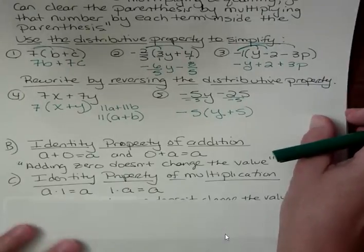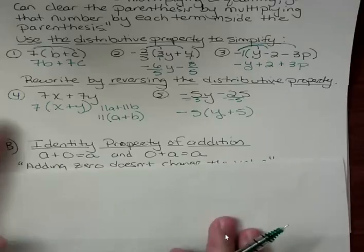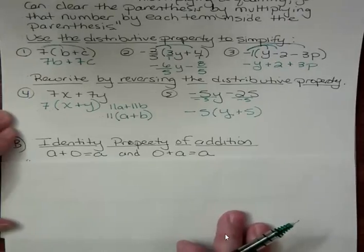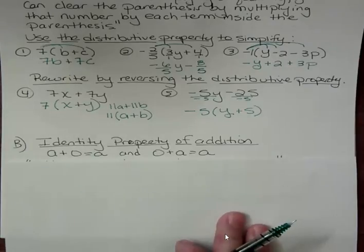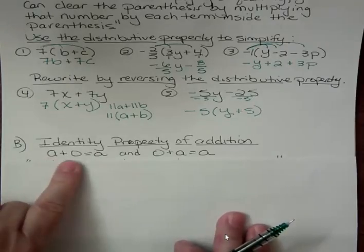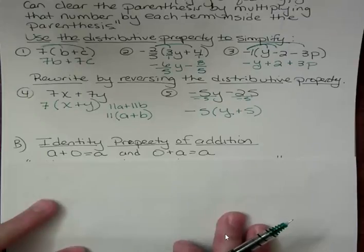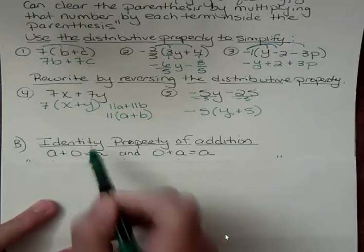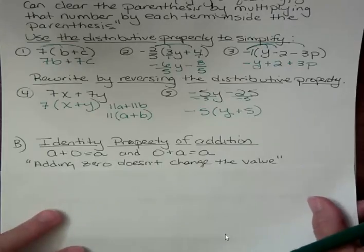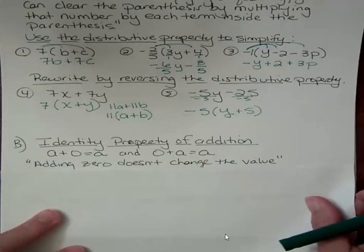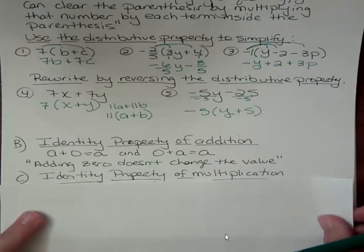Then we have the identity properties of multiplication and addition. The identity property of addition says that any number plus 0 is a, and 0 plus a is a. Whatever number you put in here, if you add 0 to either at the beginning or the end of the problem, it doesn't change anything. So it's the identity. It keeps its identity. And then it says adding 0 doesn't change the value.